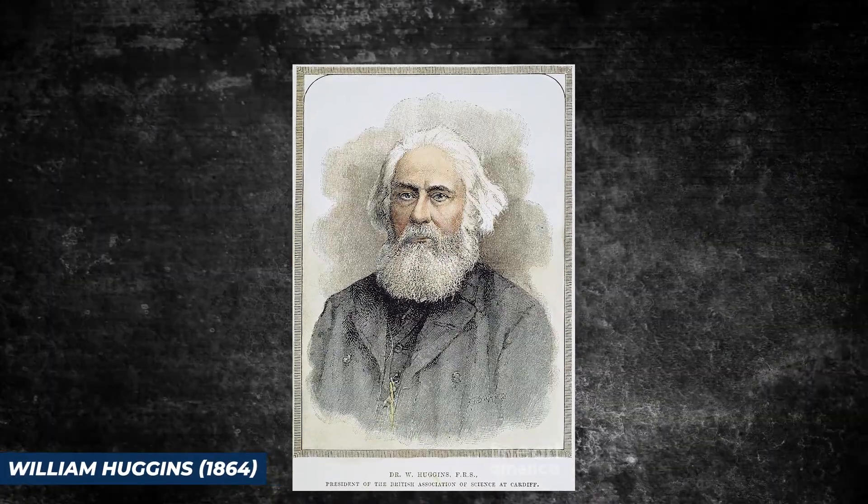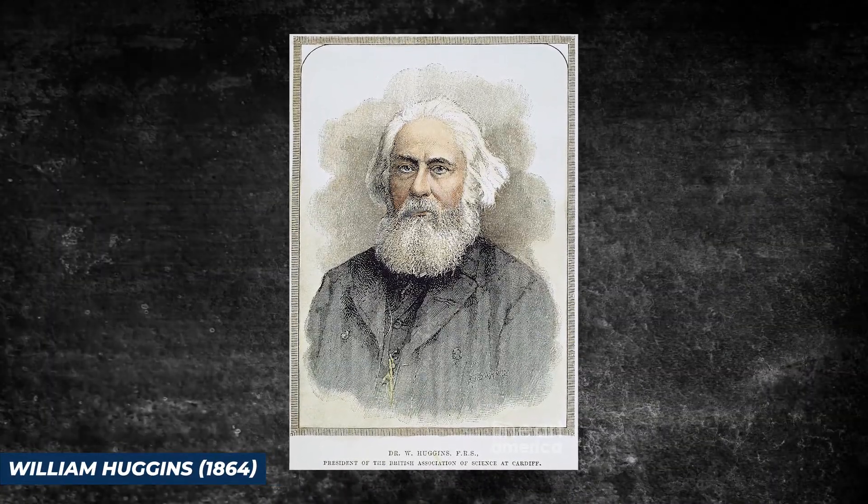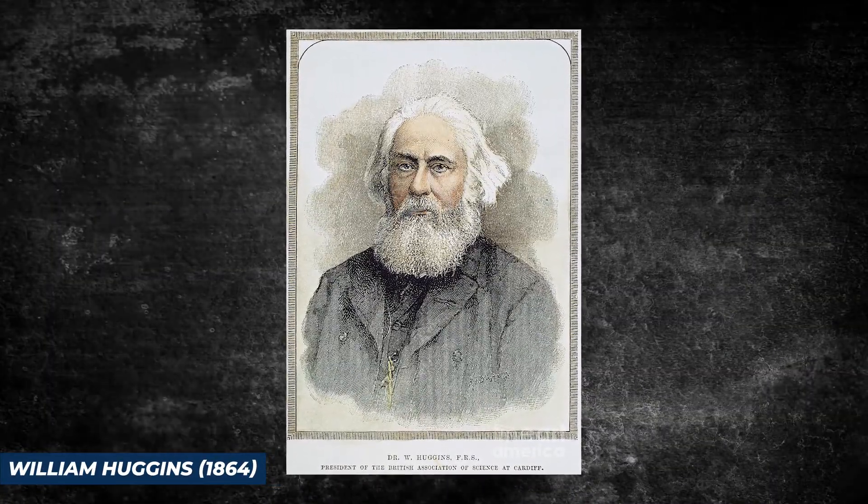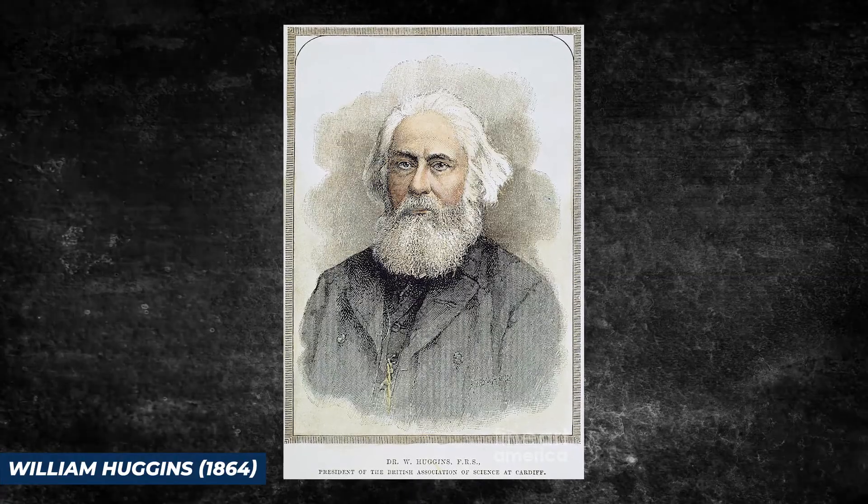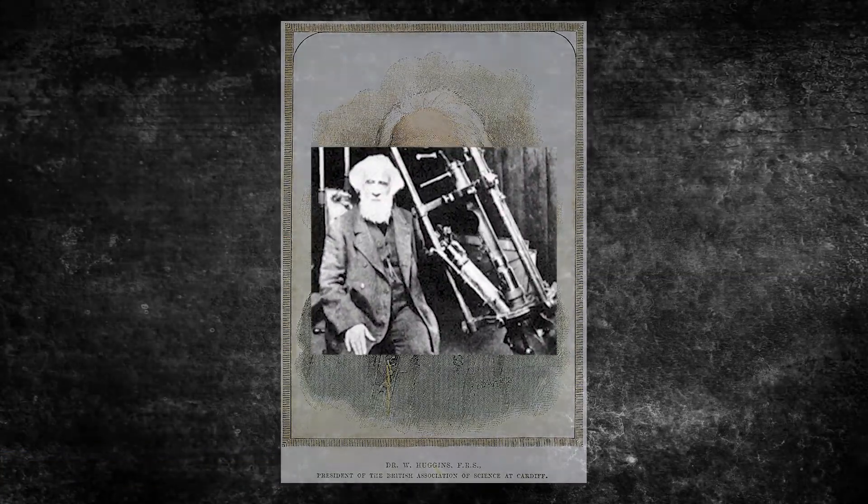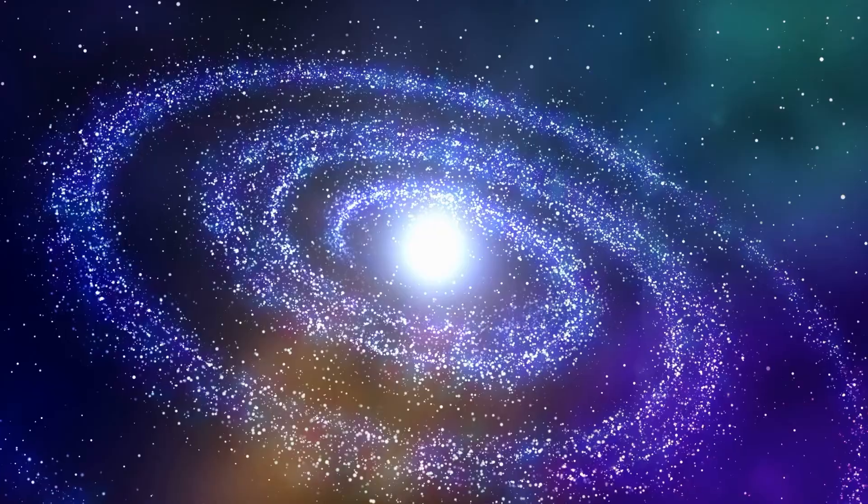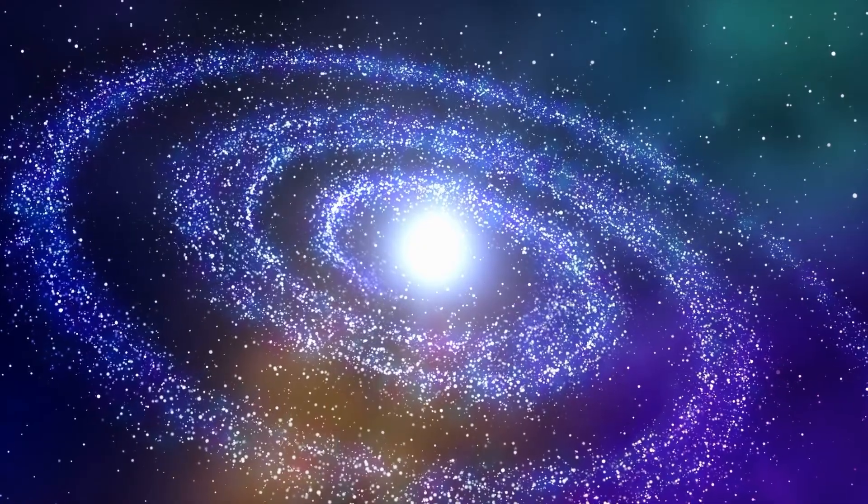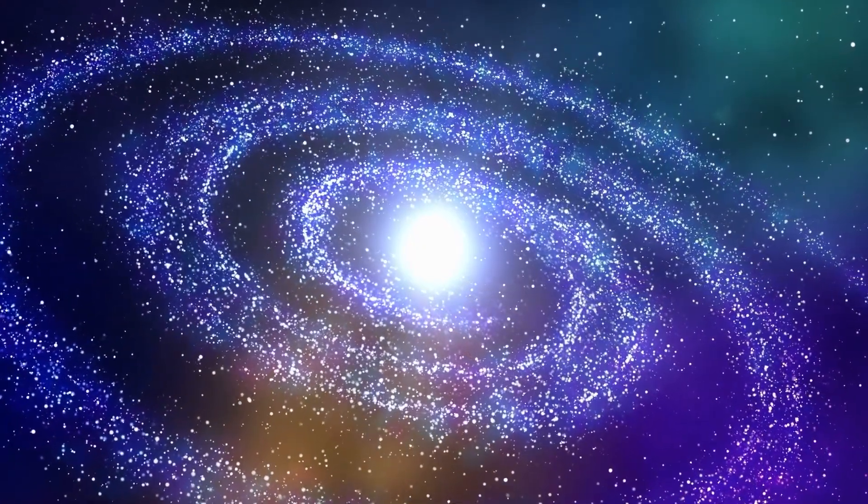In 1864, English astronomer William Huggins made a groundbreaking observation that furthered our understanding of Andromeda. He studied its spectrum and noticed that it was different from that of a typical gaseous nebula. This paved the way for the world to truly get to know Andromeda for what it really is.